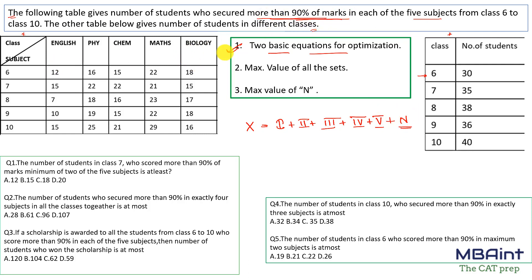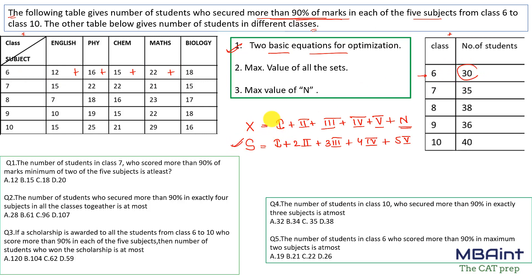The second equation: S, the sum of each of the sets, equals (1 × exactly 1) + (2 × exactly 2) + (3 × exactly 3) + (4 × exactly 4) + (5 × exactly 5). The summation of all individual set values gives S. These are the two basic equations for optimization.